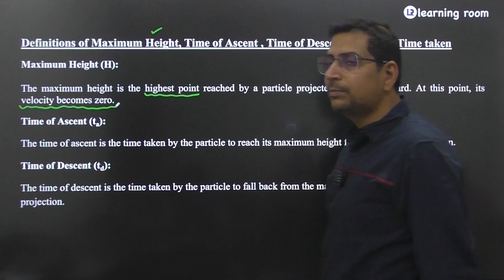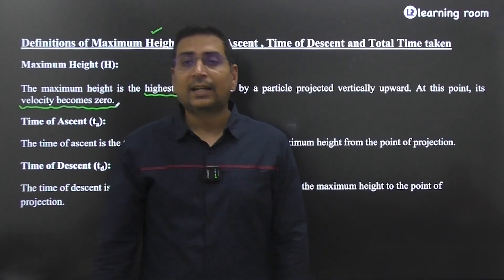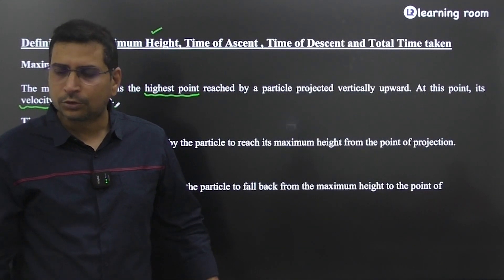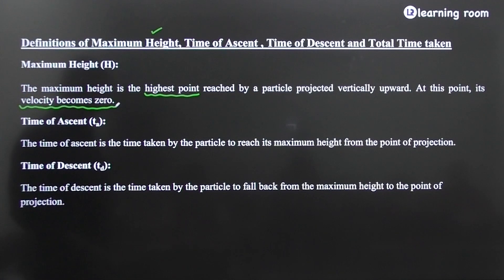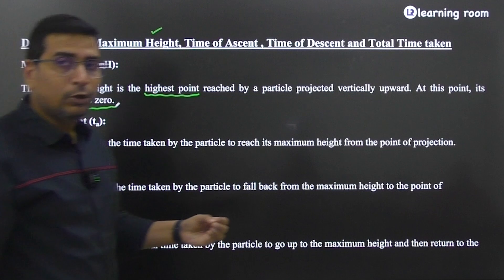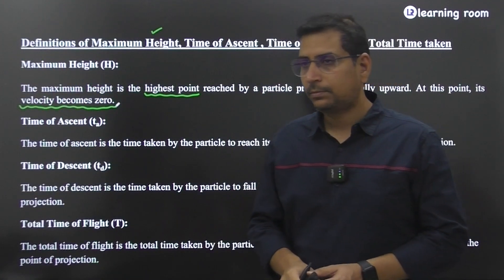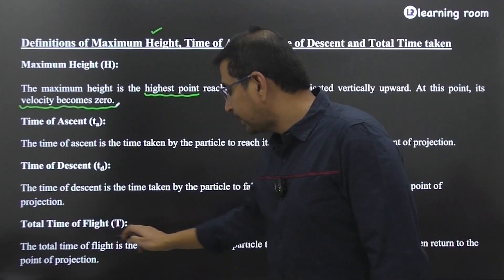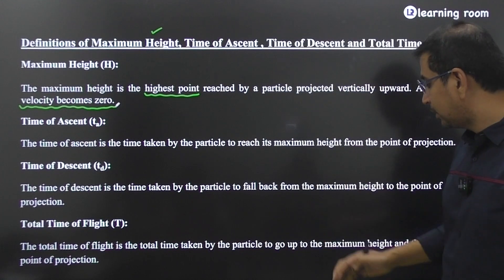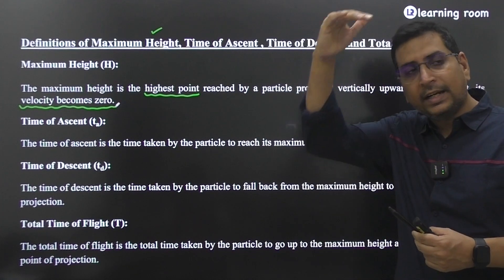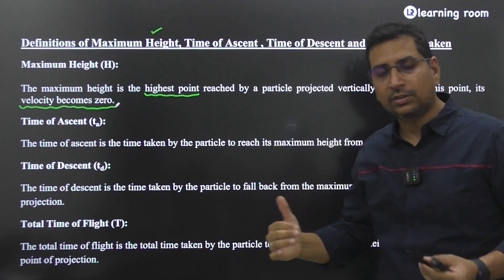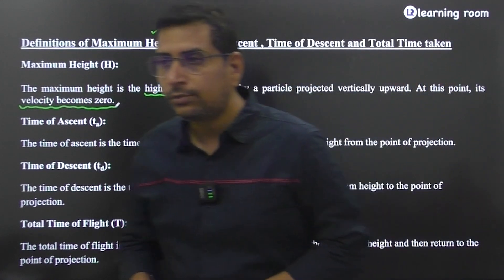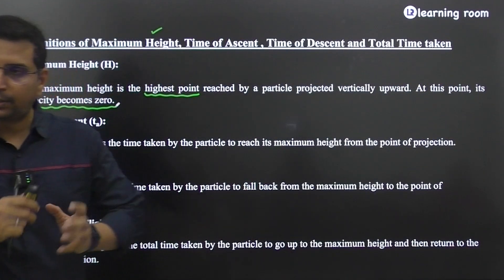The last term is time of flight. The total time of flight is nothing but the time of ascent plus the time of descent. So the total time of flight is the total time taken by the particle to go to the maximum height and come back to the point of projection. These are the basic definitions.